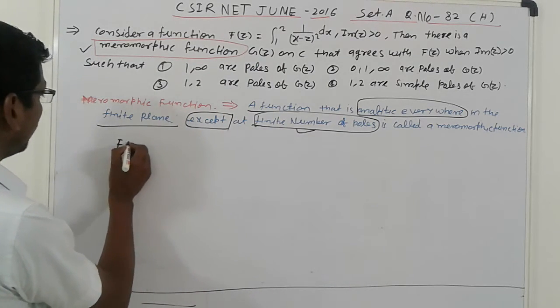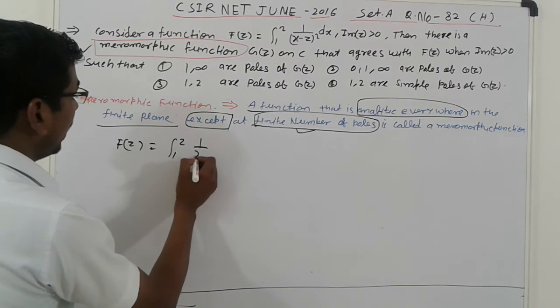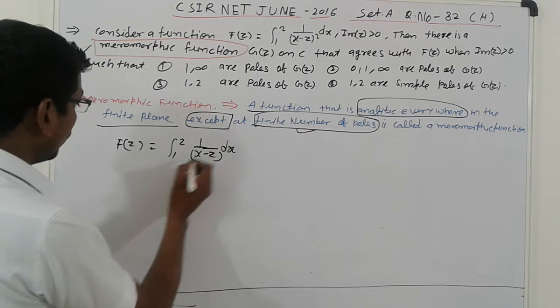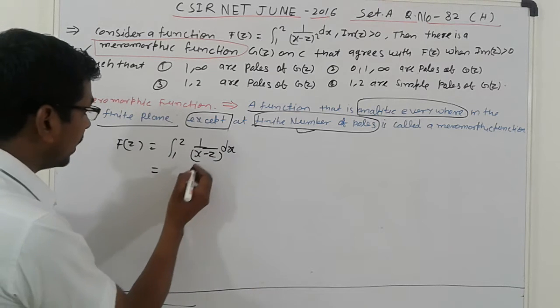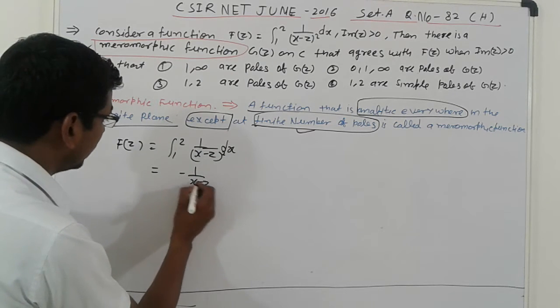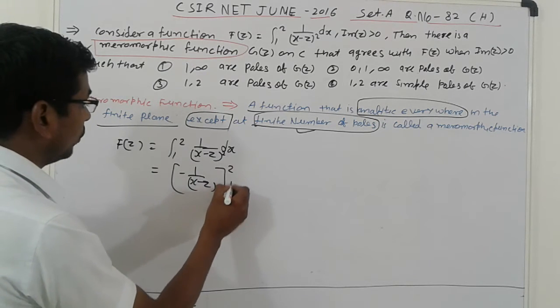Only this, go to the f of z given, one to two, one upon x minus z dx. So here, first of all, first integrate and solve it, so that we get here is square. Simplify, then one upon x minus z, integrating, and raise power two to one.